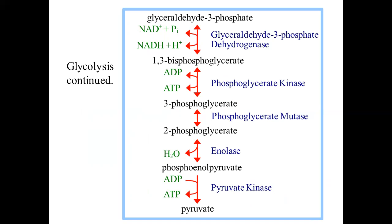Then glyceraldehyde-3-phosphate is oxidized into 1,3-bisphosphoglycerate. Here the phosphate addition is not by consumption of ATP but by oxidation, so the enzyme involved is glyceraldehyde-3-phosphate dehydrogenase. Then 1,3-bisphosphoglycerate releases one phosphate and forms ATP — our concerned product — and the enzyme involved is phosphoglycerate kinase. Then 3-phosphoglycerate converts into 2-phosphoglycerate by shifting the phosphate ion from position 3 to position 2.